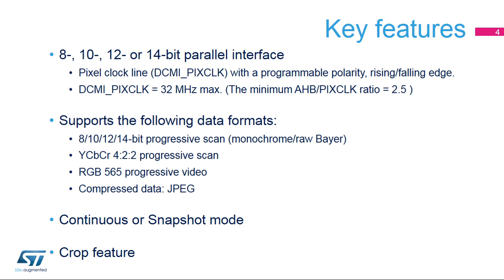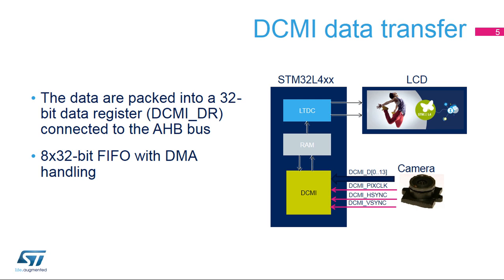Some cameras also use this parallel interface to transmit compressed images in JPEG format. This is an example of a simple application used to transmit the camera image to the LCD display. The standard way to use the camera interface is to store the received data in a frame buffer in RAM. The STM32 can then process this data or transmit it further through another interface, such as USB or Ethernet.